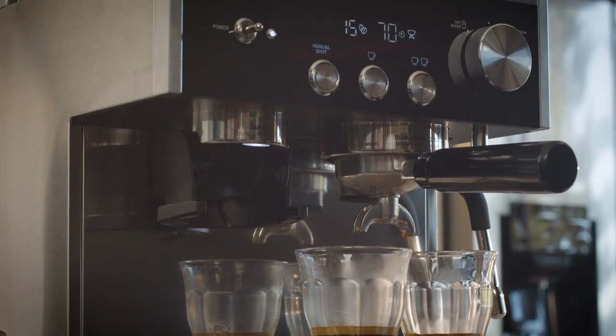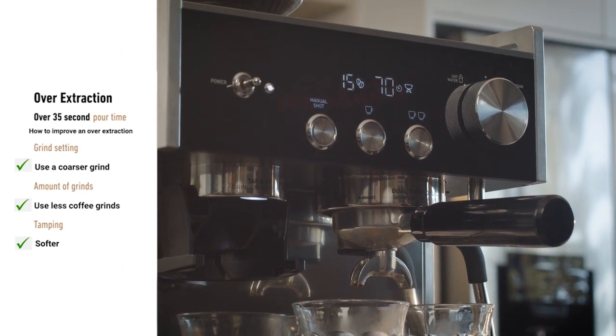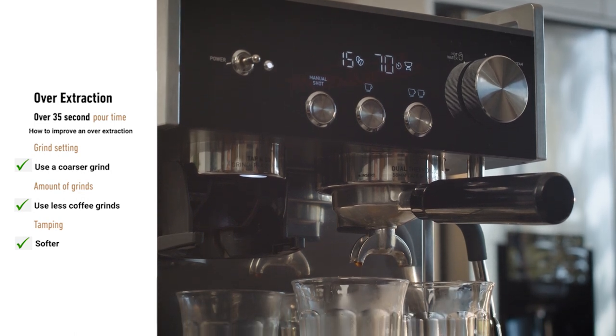To fix this, simply use a coarser grind. Another option is to try to use a little less coffee in the filter basket and tamp with a softer pressure.